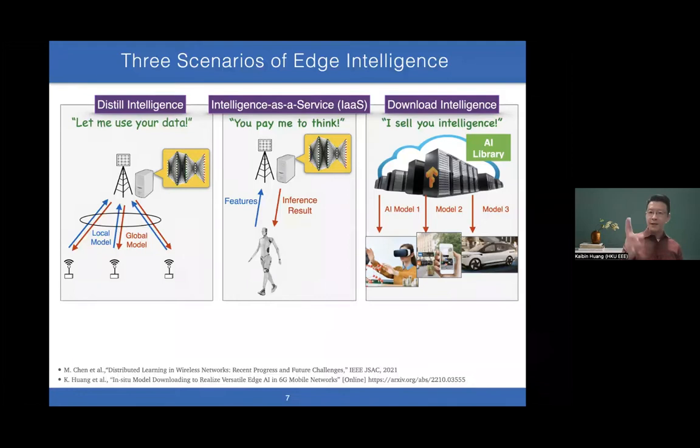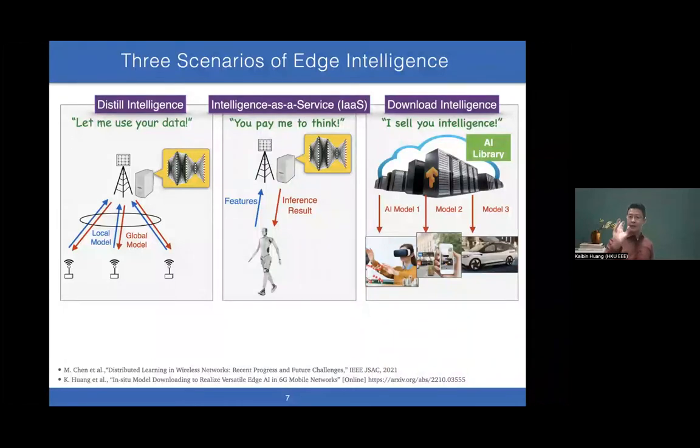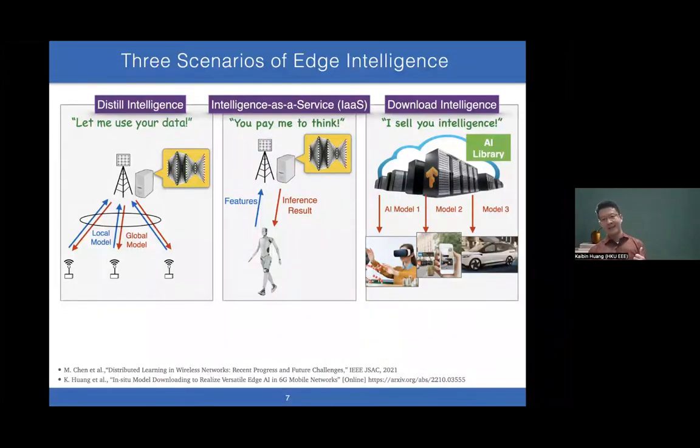The second scenario: after training, provide intelligence as a service. You pay me, I let you use my large-scale AI models. If you're a robot, upload features to me. I'll tell you the inference result using my AI models, which you cannot operate.